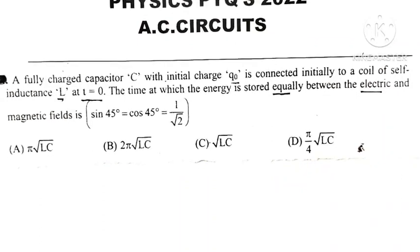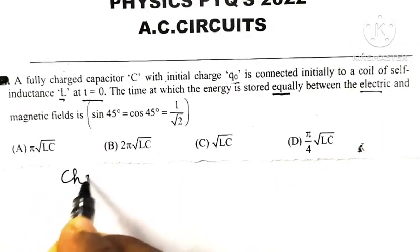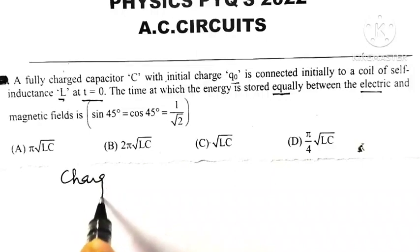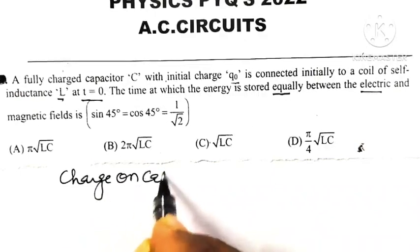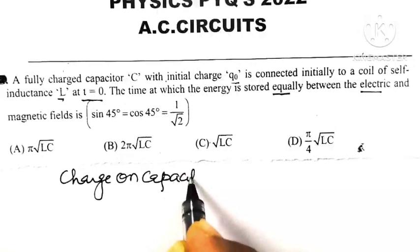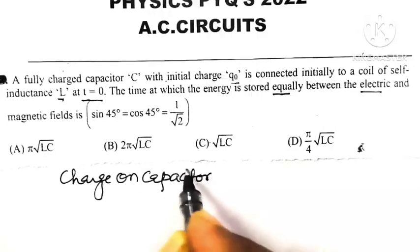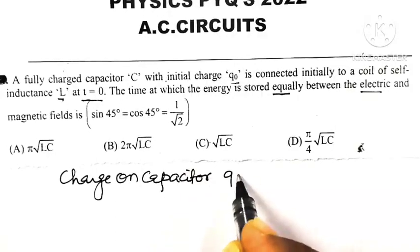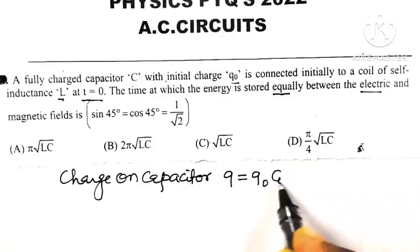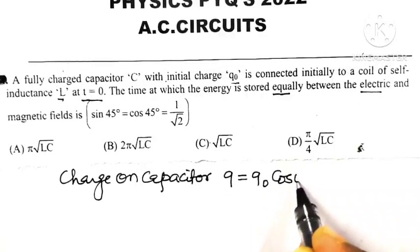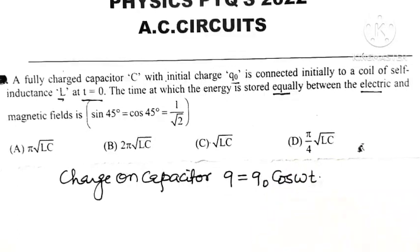We know that the instantaneous charge stored on the capacitor is Q equal to Q0 cos of omega t.